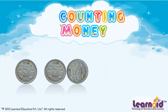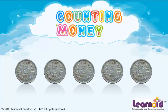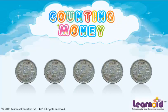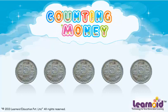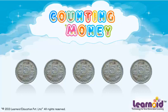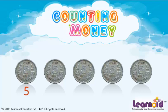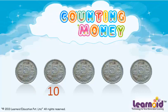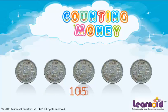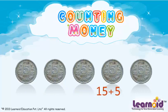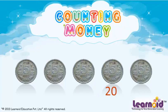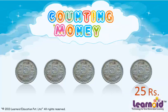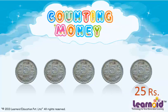These are 5, 5 rupee coins. We will do skip counting with 5: 5, 10, 15, 20, 25. Total money is 25 rupees.